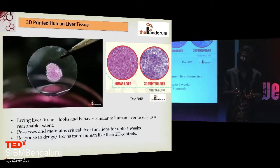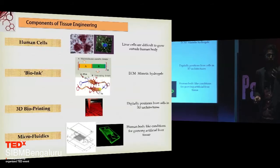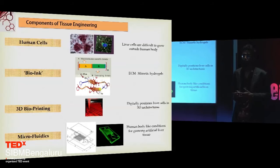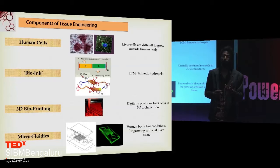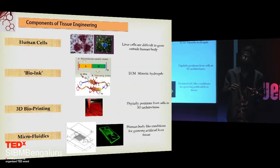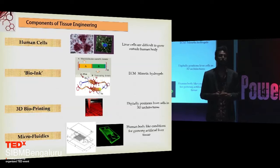This allows us to test drugs, vaccines, and study other things outside the human body. And you can make many of them. The various components of tissue engineering are: you need human cells — from cell lines, cell banks, or even from a patient biopsy. You need bio inks, which keep the cells in their native, healthy environment. Then you need a 3D bioprinter which can pattern or place these cells in whatever architecture you want — skin architecture, liver architecture. And you need microfluidics, wherein you grow these tissues under body-like conditions.